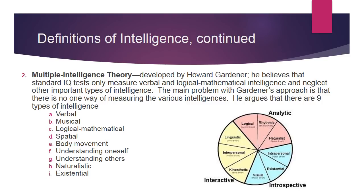He argues that there are nine types of intelligence: verbal, musical, logical, mathematical, spatial, body movement, understanding oneself, understanding others, naturalistic, and existential. You'll see on the chart on the right how they're broken up in terms of whether they're interactive, analytical, or introspective.